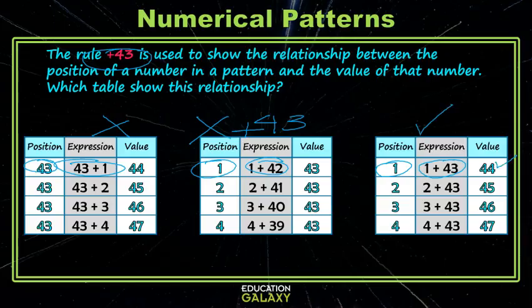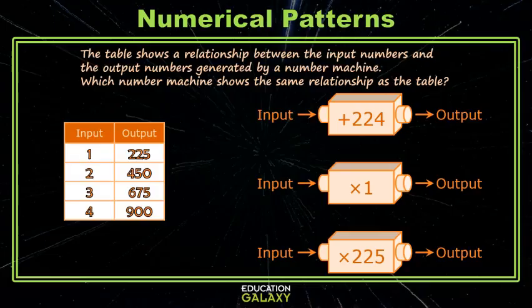Who wants to try one more example? Here our table shows the relationship between input and output numbers. We're told they're generated by a number machine, and we want to know which number machine matches the table.